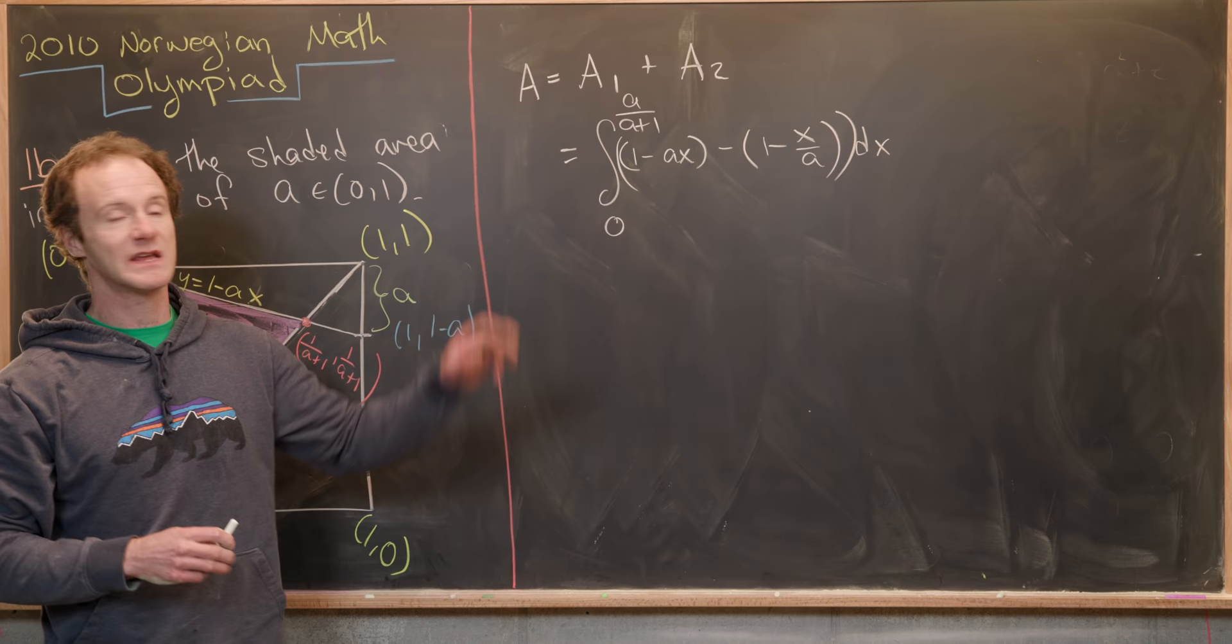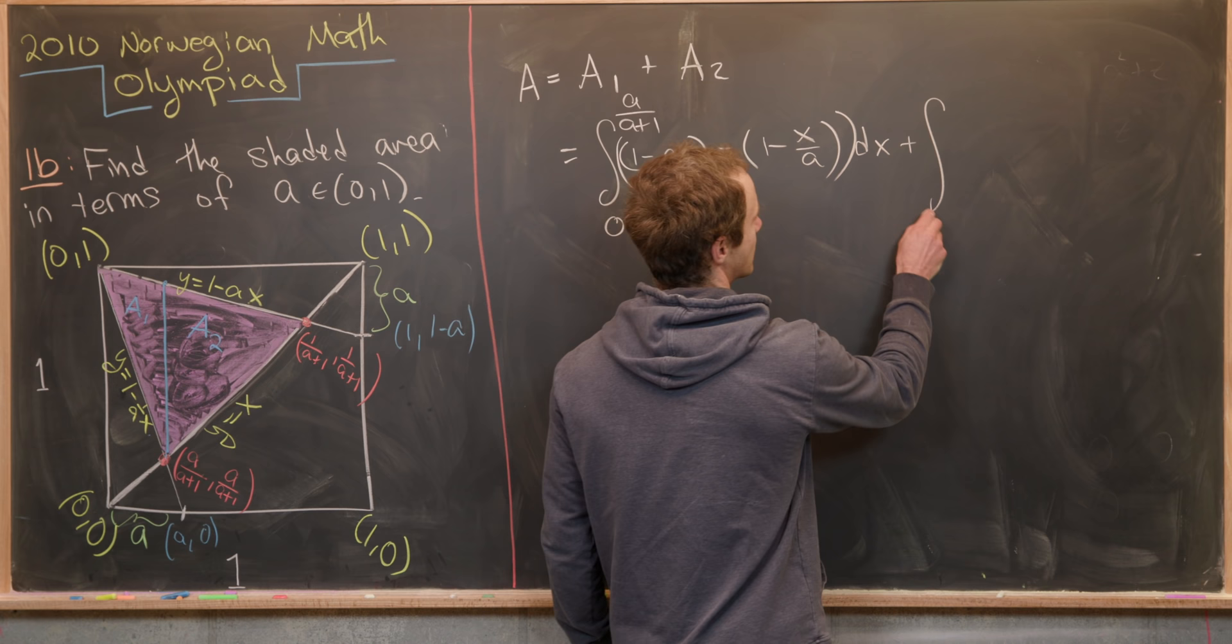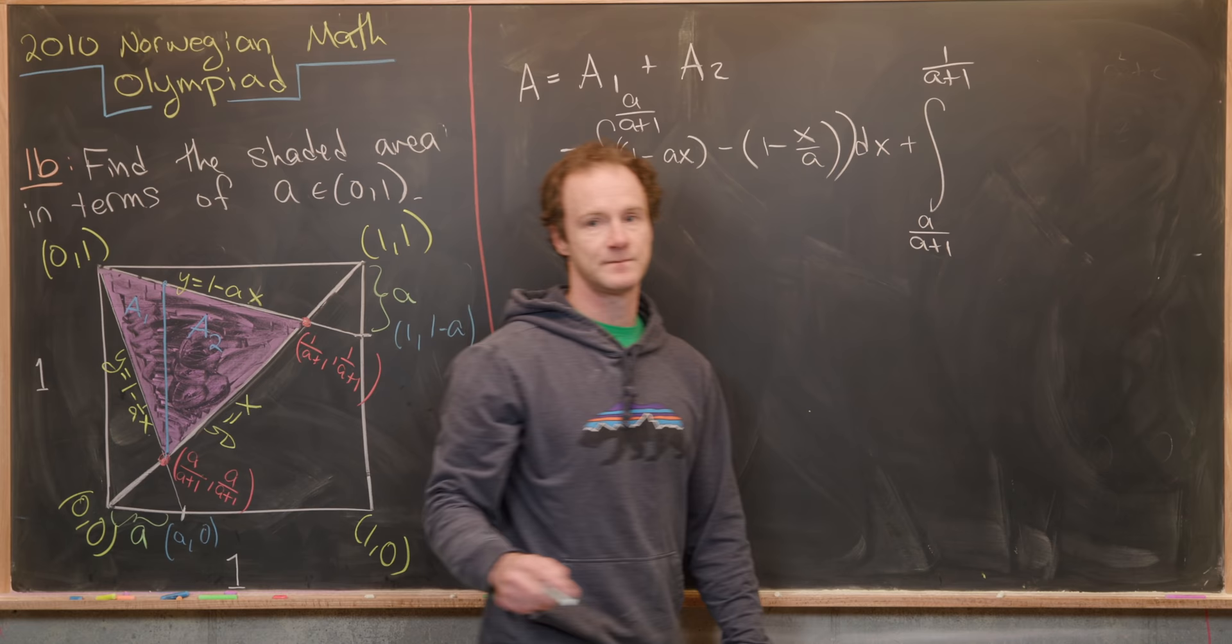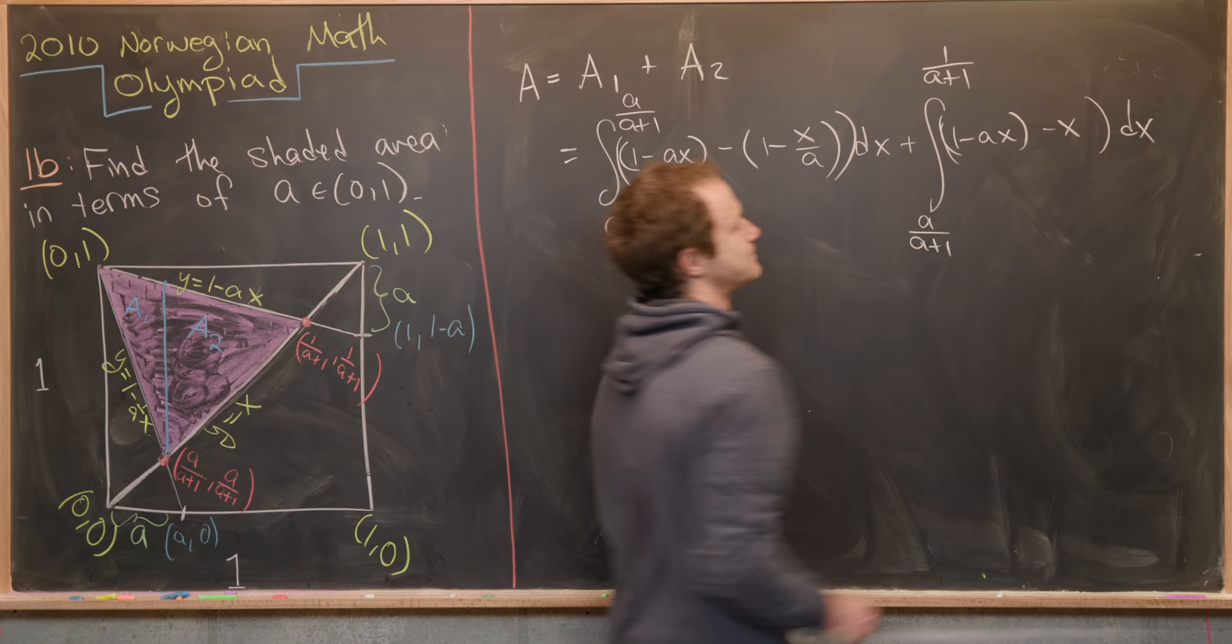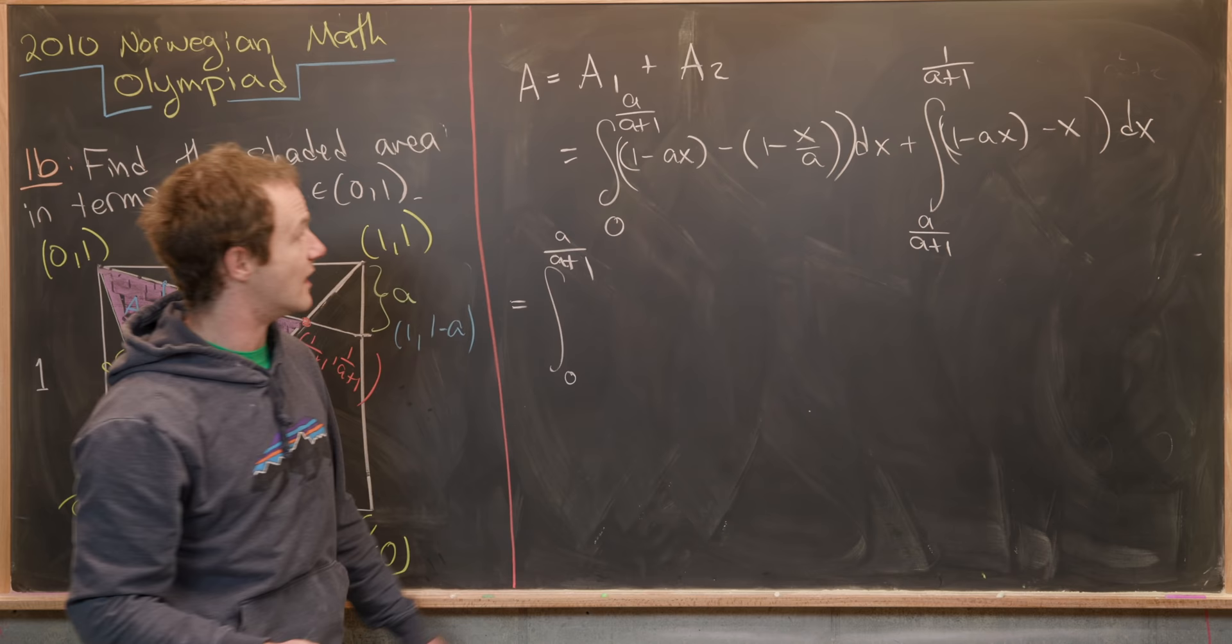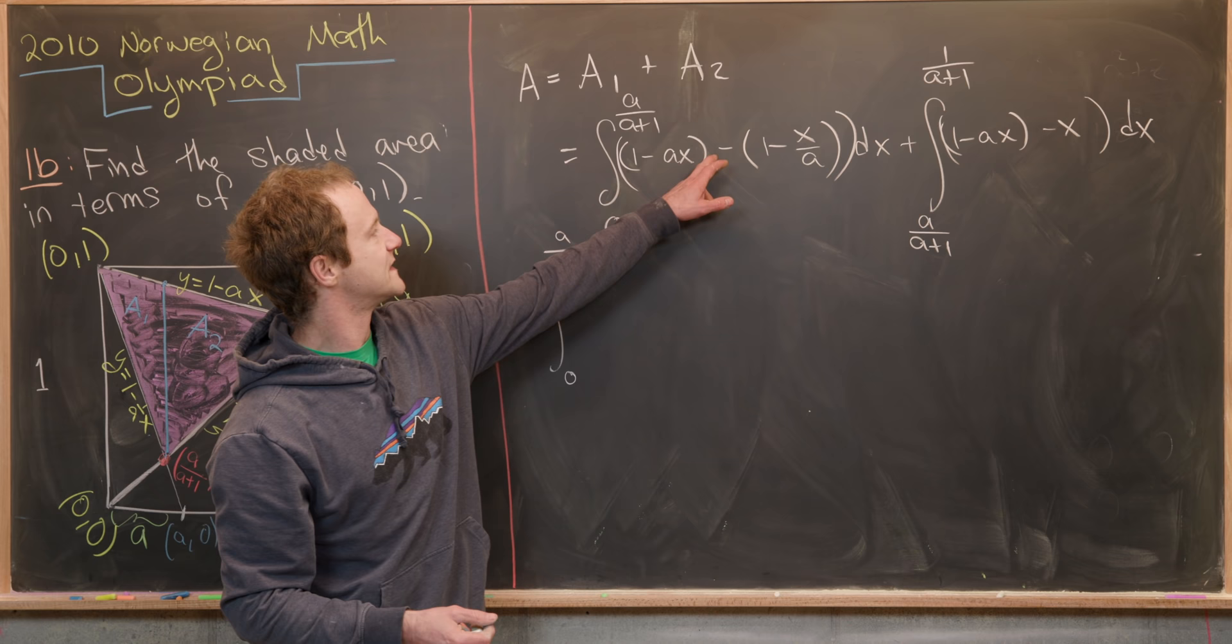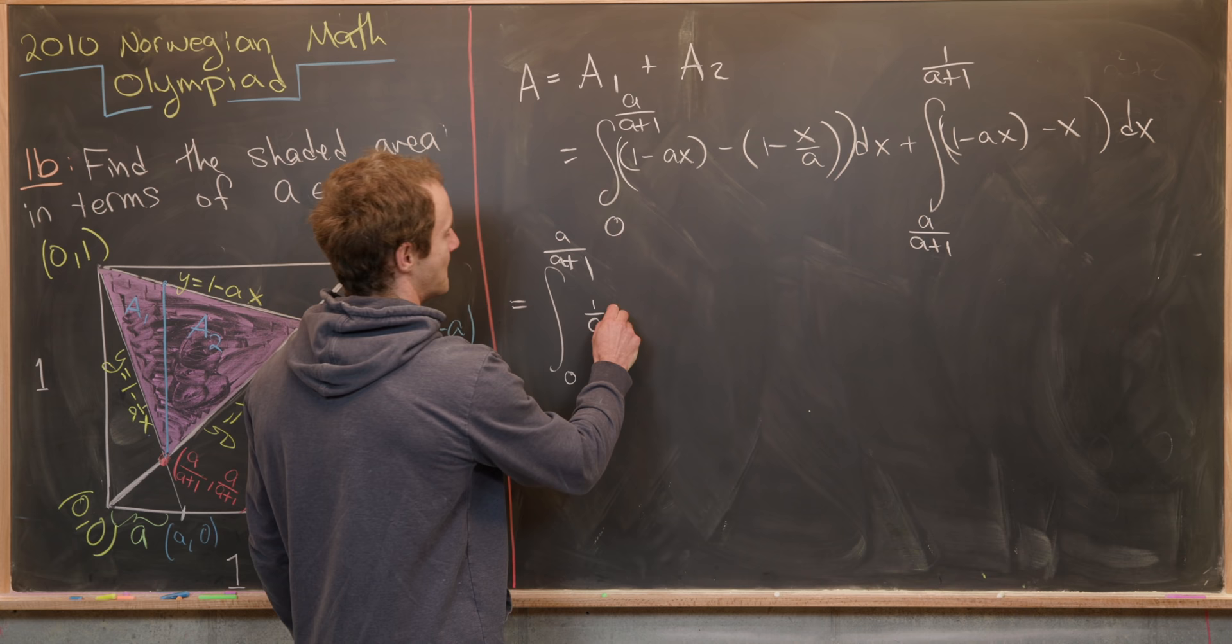Now we can do the same thing for area 2. So that's going to be the integral from, well, it'll be this X value here to this X value here. So I'll write those down, A over A plus 1, and then 1 over A plus 1. And then we've got a different bottom curve, but the same top curve. So we have 1 minus AX, and then minus X DX. So that's what we're left with. So let's see what kind of simplification we can do. So this is going to be the integral from 0 to A over A plus 1 of, well, what do we have? The 1 is going to cancel with the 1. Well, this is going to cancel this minus sign. And then we can maybe factor an X out, leaving us with something that looks like 1 over A minus A times X DX, like that.